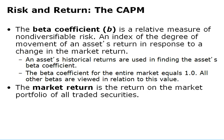Let's talk about the beta coefficient. The symbol is a small b, sometimes written in fancy script, and it is a relative measure of non-diversifiable risk. We use beta to measure this risk — it is an index of the degree of movement of an asset's return in response to a change in the market return. An asset's historical returns are used to find its beta coefficient. The beta coefficient for the entire stock market is 1, and betas are viewed in relationship to that market beta of 1.